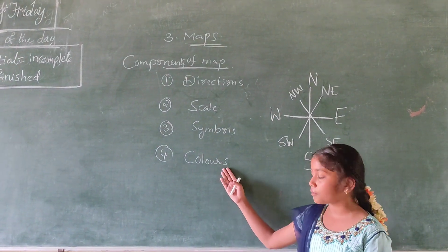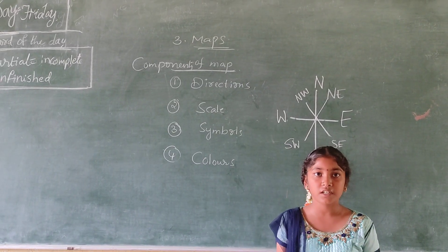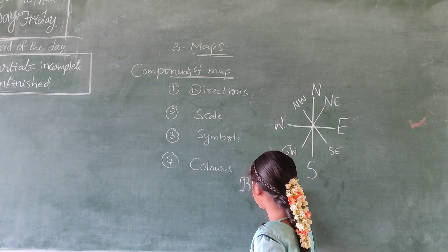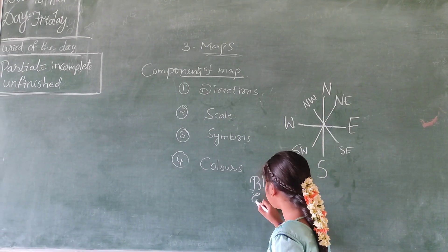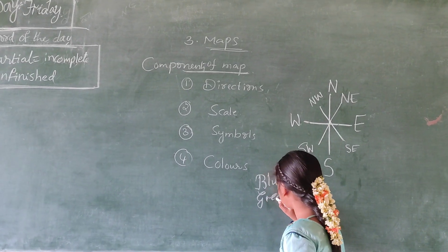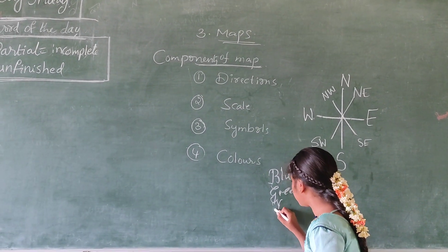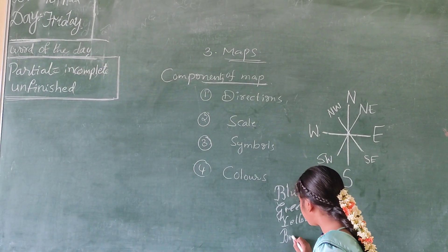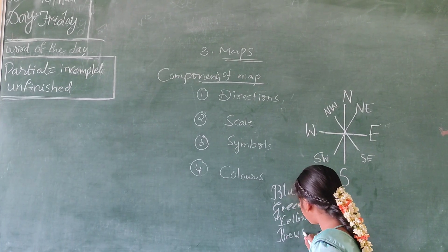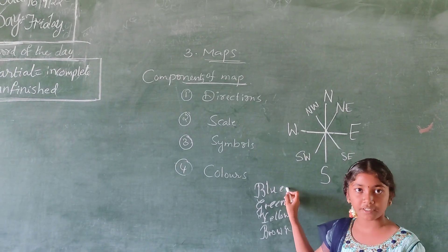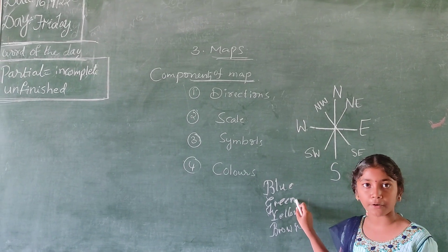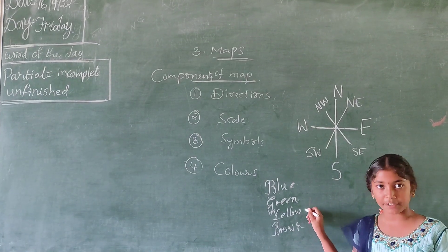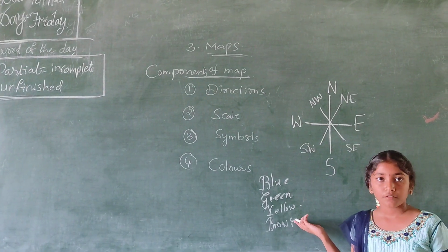Now we are going to colors. We have four colors: blue, green, yellow, and brown. Blue represents water bodies. Green means forests or plains. Brown means mountains. Yellow means plains or plateaus.